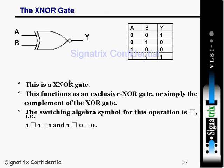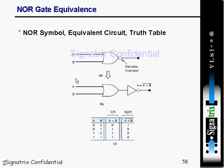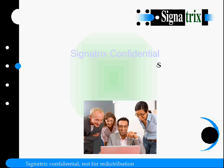Coming to the XNOR gate: when any one of the inputs is 1, the output is 0; otherwise the output is 1. The XNOR gate is the complement of the XOR gate. The switching algebra symbol for XNOR is shown — it is essentially the XOR output complemented.